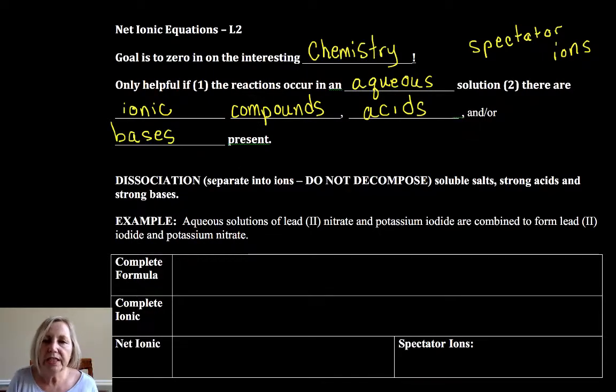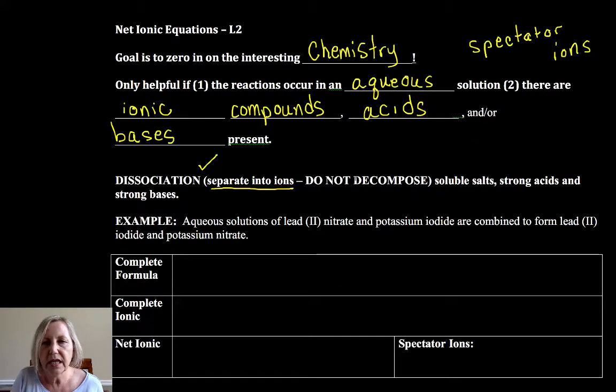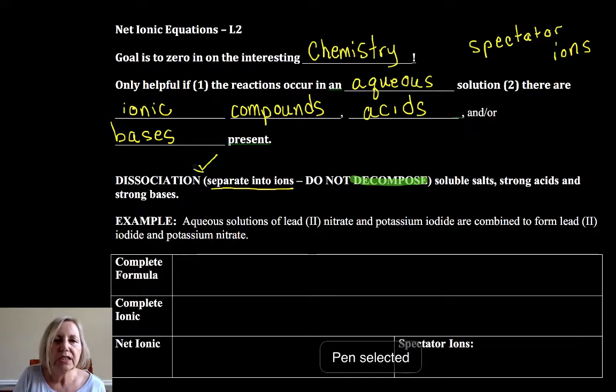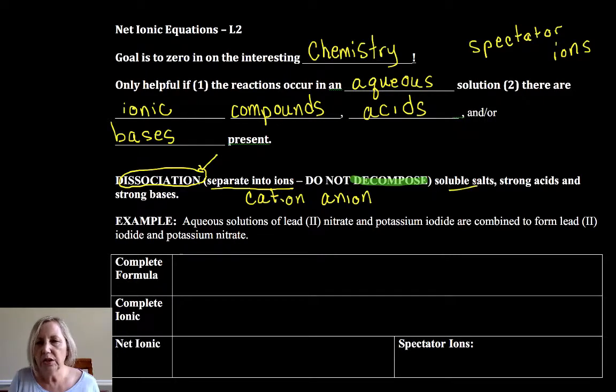And how we're going to start this out is we're going to dissociate or separate into ions. Now be really really careful. When I was just grading the AP test I saw a lot of students decompose instead of dissociate. We want to dissociate, identify your cation and anion for soluble salts, strong acids, and strong bases.